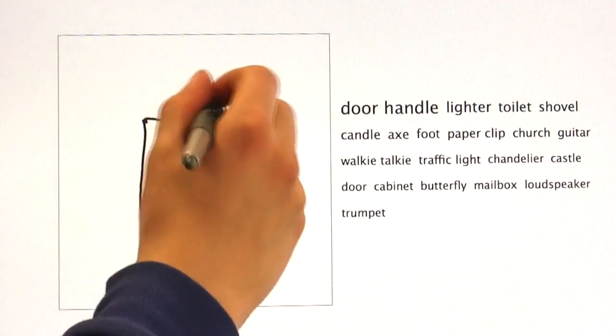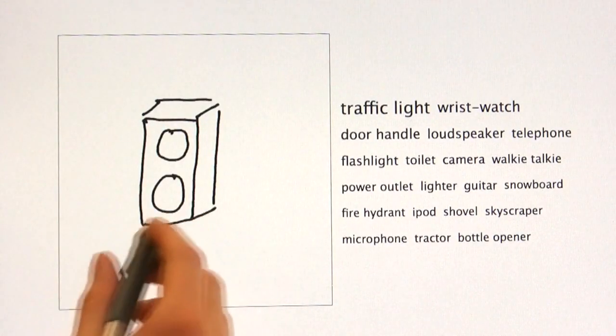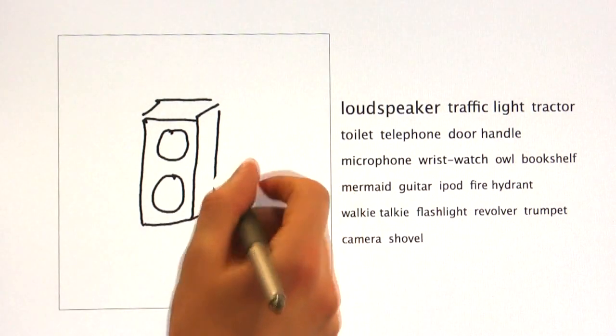In many cases, the rough overall shape of two different objects are quite similar, and only by adding or removing small details can we clearly communicate the desired category.